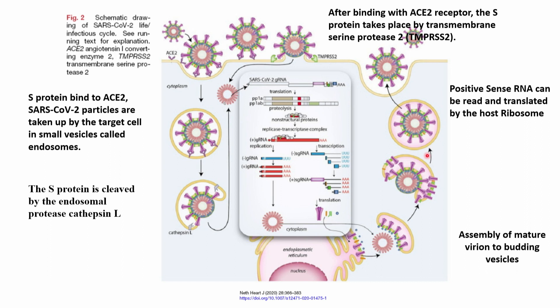Now we can see the scheme of how the virus enters our cell. First, the S protein spikes bind to the ACE2 receptor of the human cell, and then they are taken up by the target cell in a small vesicle called an endosome. The S protein is then cleaved by endosomal protease cathepsin L, and the RNA comes outside. There is another pathway where, after binding with the ACE2 receptor, S protein cleavage takes place by transmembrane serine protease 2, TMPRSS2, and again the RNA comes out.